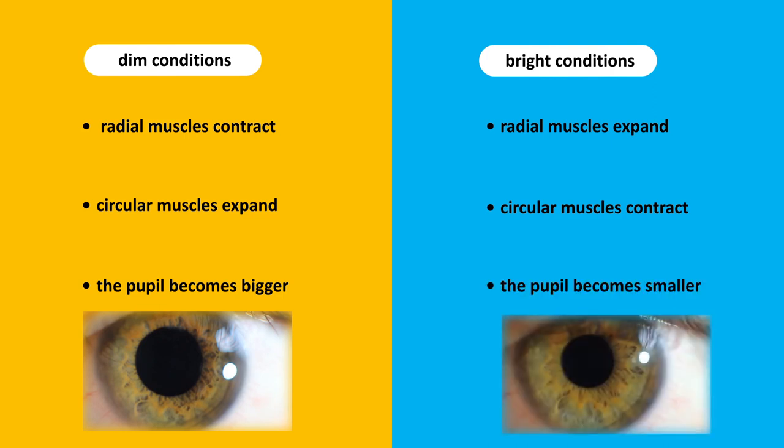So, the iris adjusts the size of the pupil in our eye based on the brightness of our surroundings. But what happens after light enters the eye?